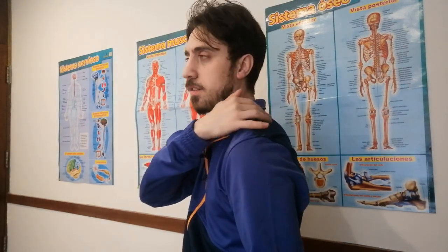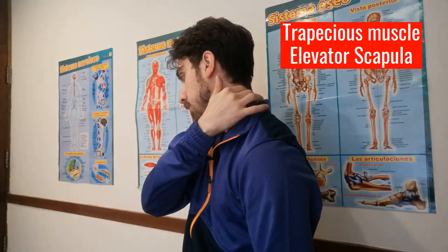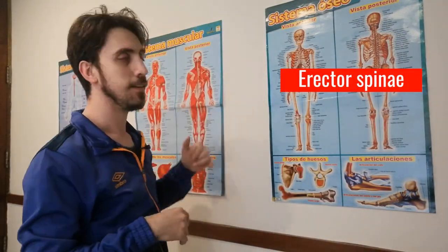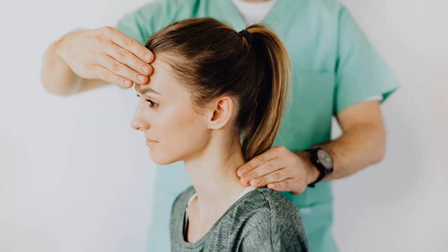Tension or headache caused by the pectoral muscle happens when we have the habit of bringing the shoulders forward. This causes an overstretch of the trapezius muscle, the elevated scapula, and also the para-vertebral muscles that go along the spine. That pain is caused because those muscles are overstretched — and when a muscle is overstretched, there's another muscle that's overly tight.